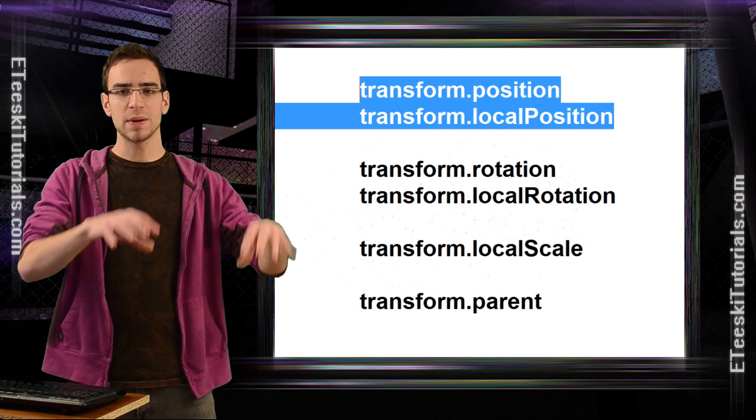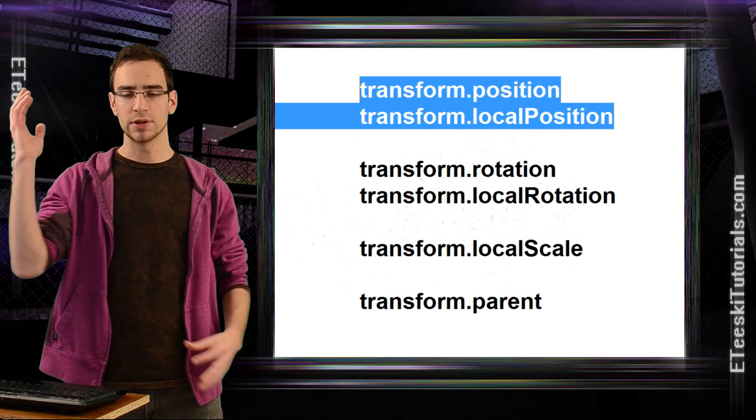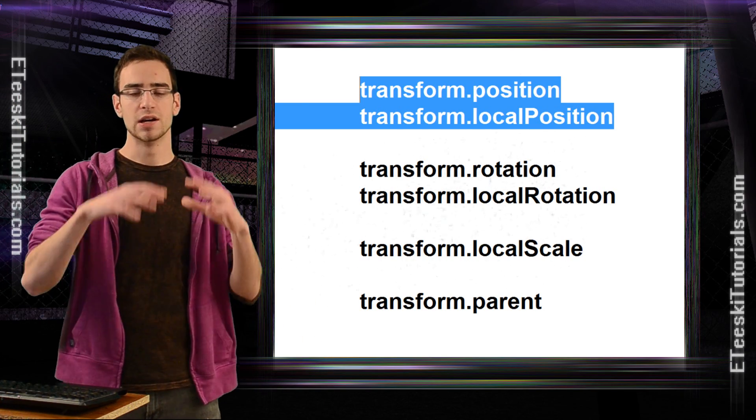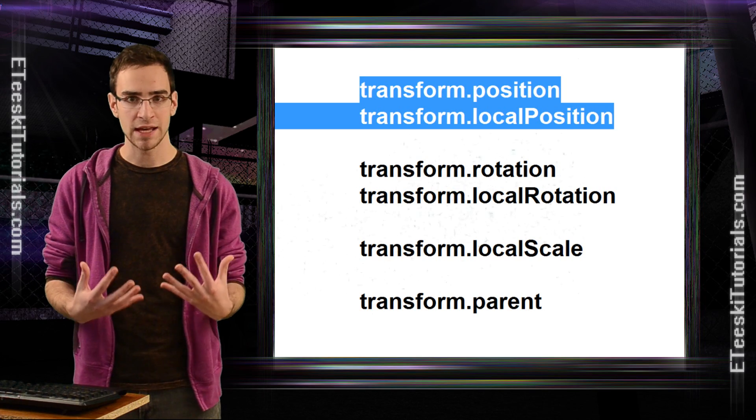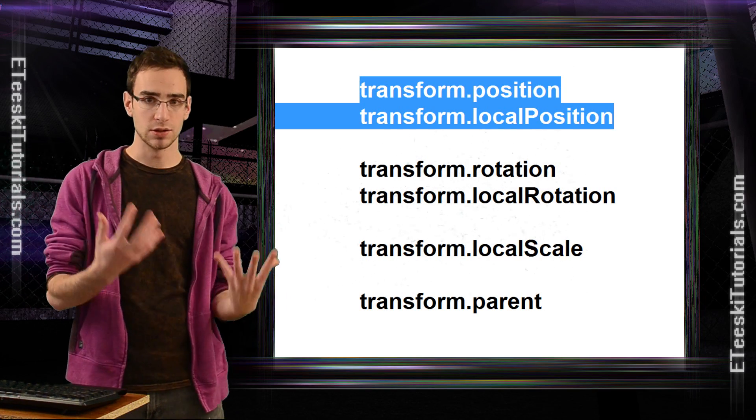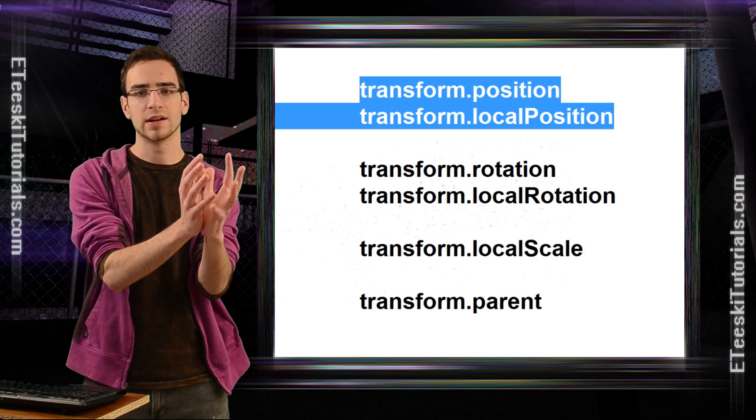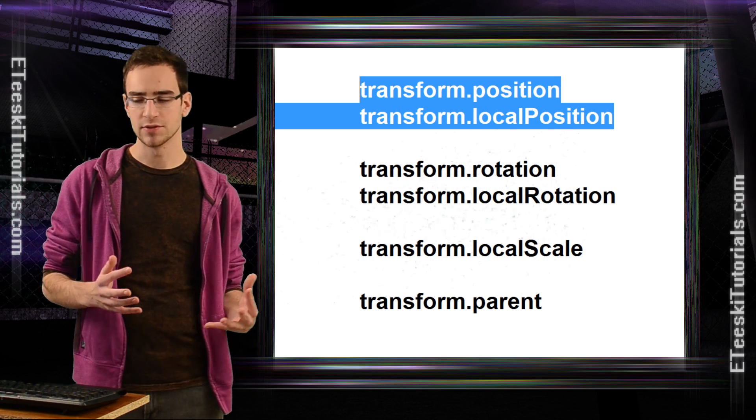But in world space, it doesn't matter where its parent is going to be. The parent is going to change the position and rotation of that game object. But after that change, transform.position is going to return you that position after it has been changed and just exactly where it is in 3D space, not relative to its parents.